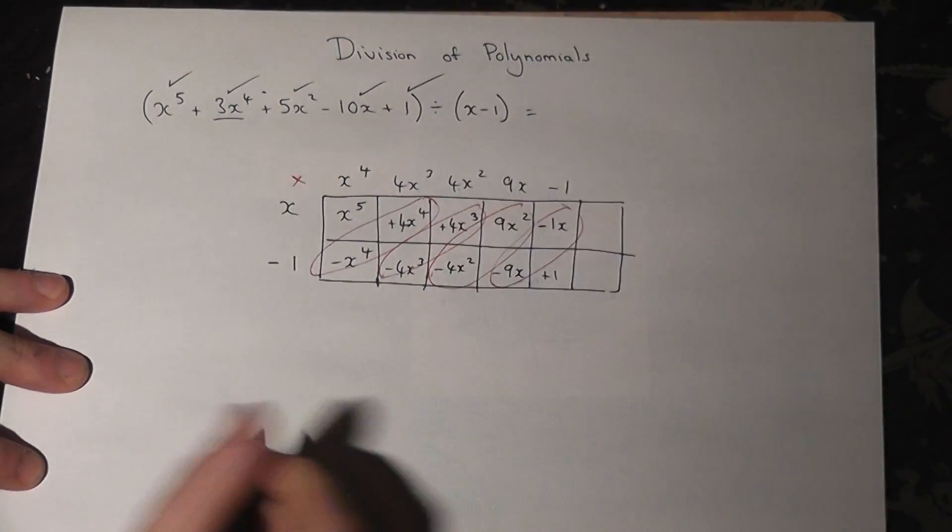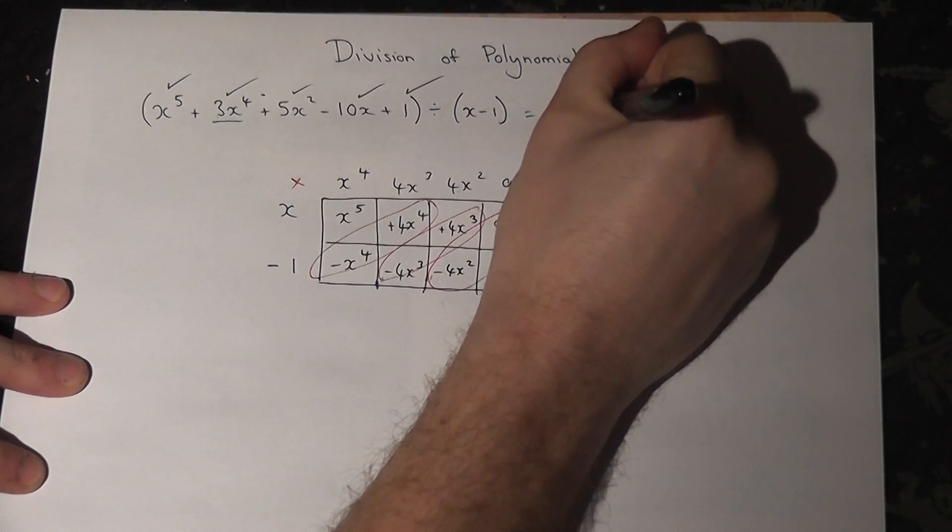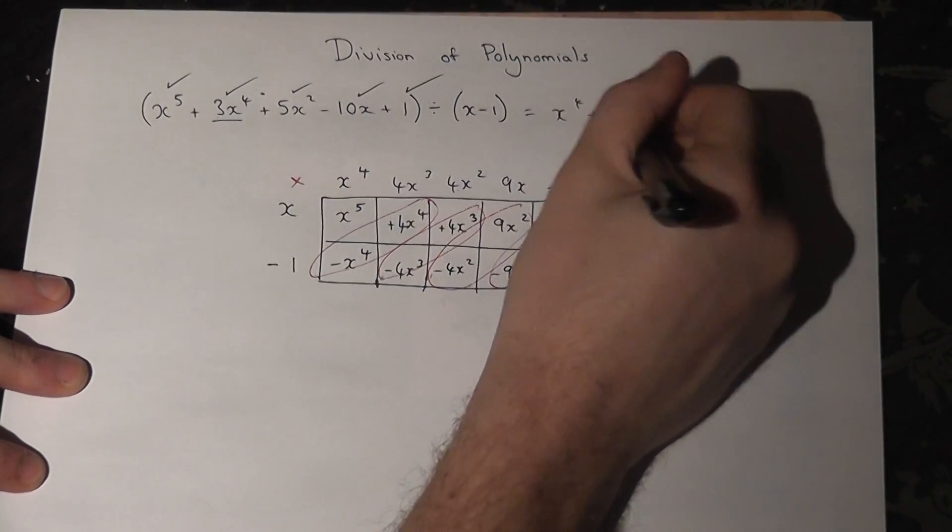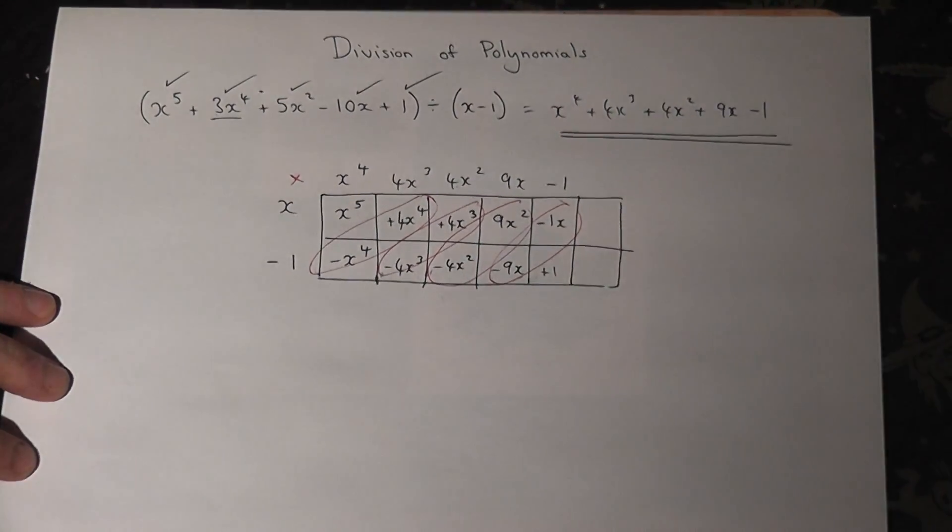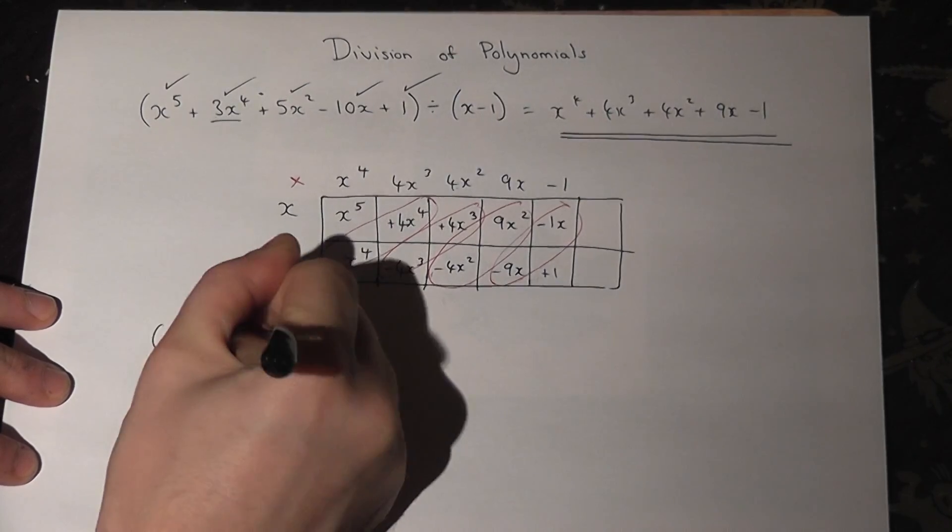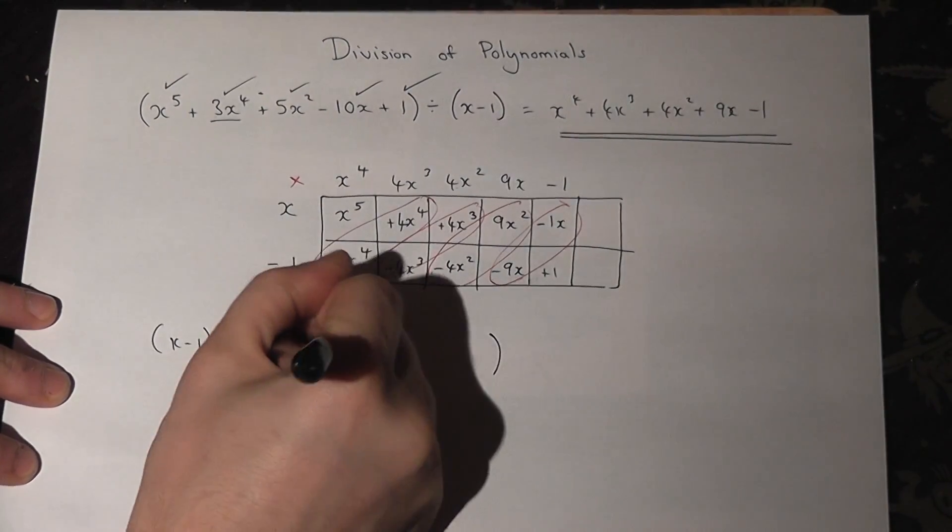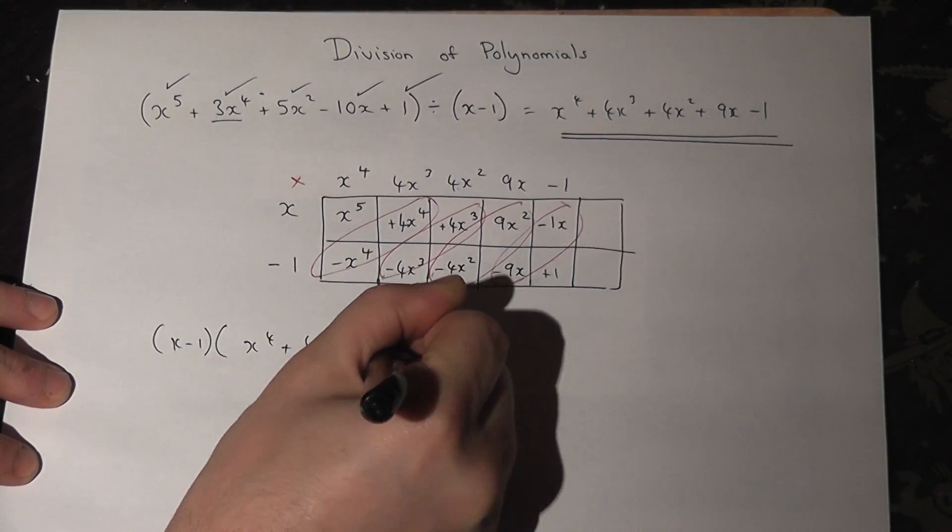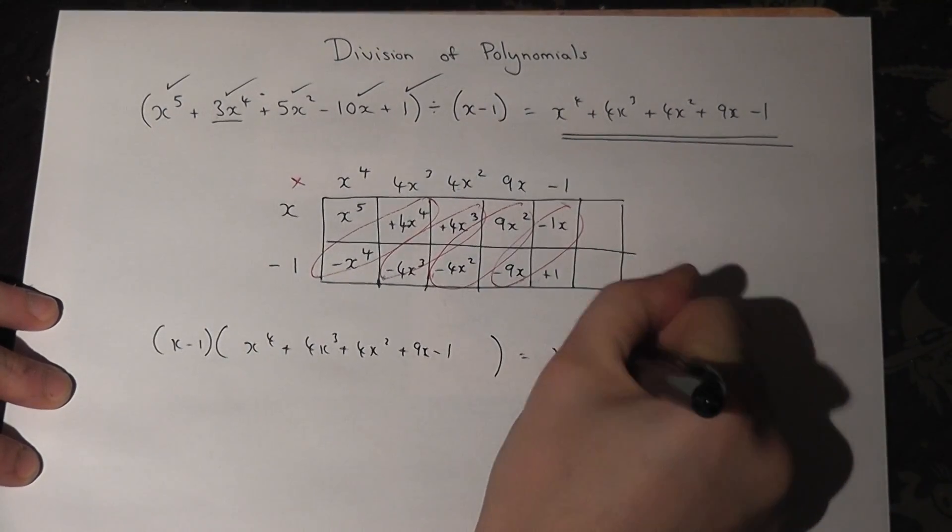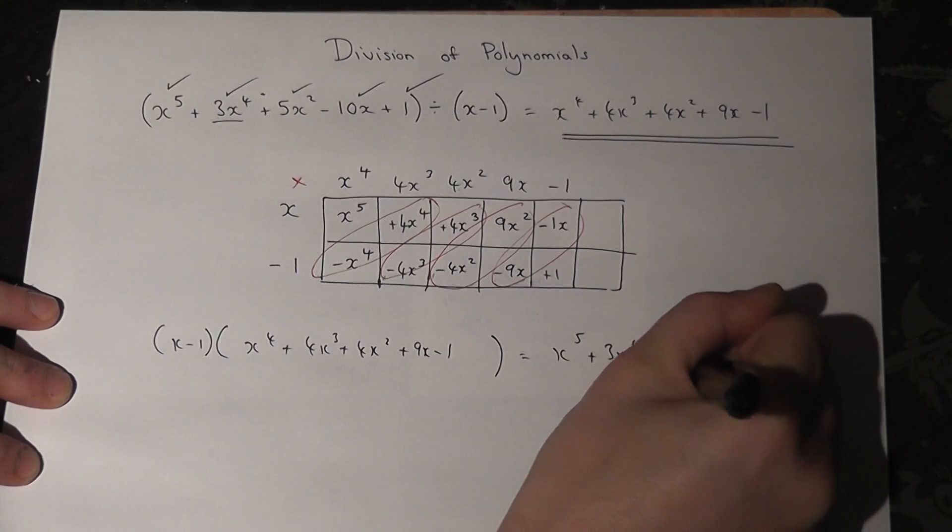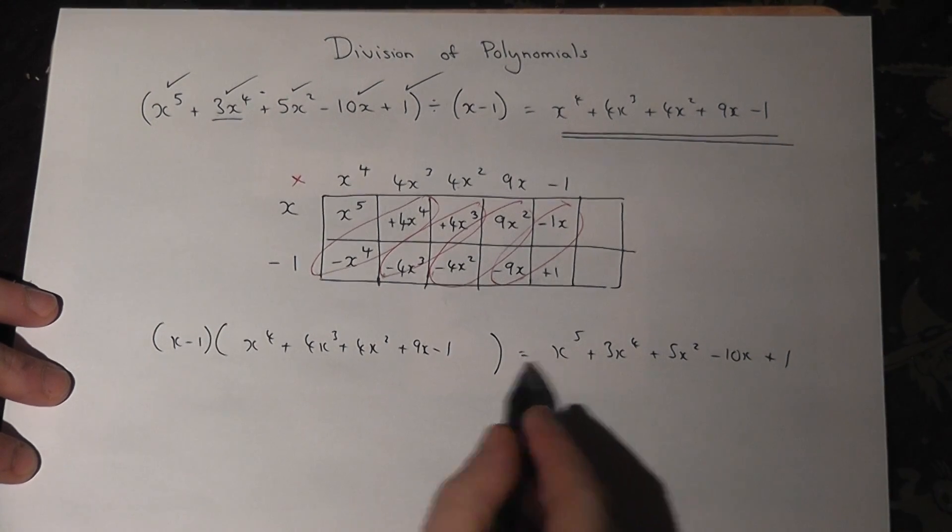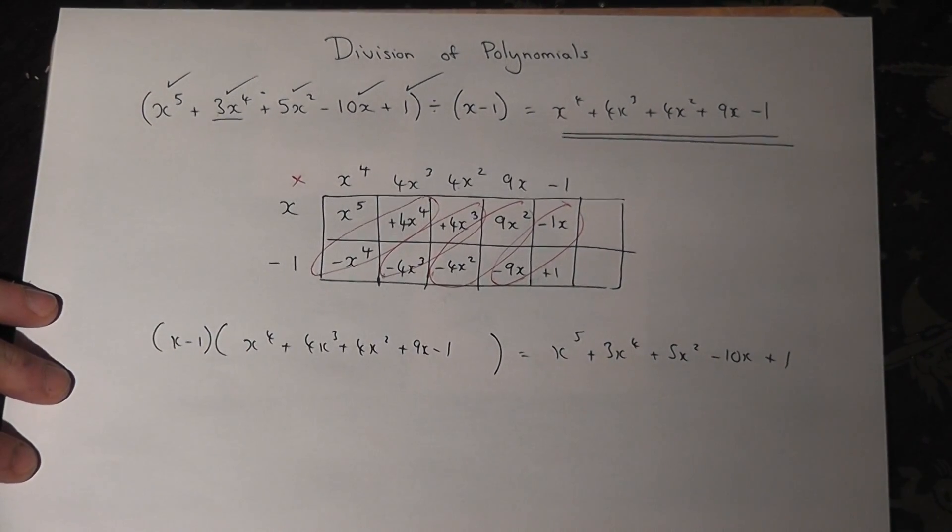So the answer is on the top line: x to the power of 4 plus 4x cubed plus 4x squared plus 9x minus 1. And this can be written down in a converse way: that x minus 1 times by the answer must equal the original question. So we have begun to factorize the original expression, and x minus 1 happens to be one of the factors.